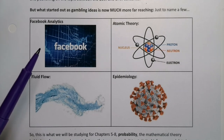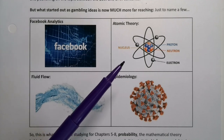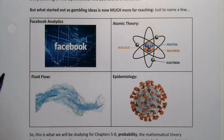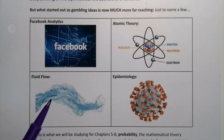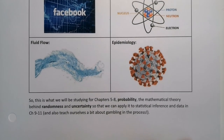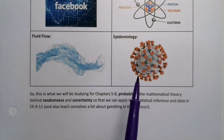Atomic theory at its core is working off of probability — that's the math involved with upper-level atomic theory. Fluid flow, how waters and fluids work, and also electromagnetism and electricity work like a fluid. And epidemiology — COVID-19 being a good example — is very heavy in probability theory: if we do this, the chances of this many people being infected is this, and so on.